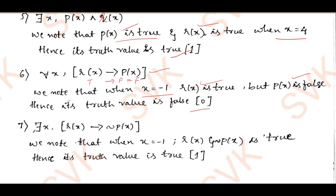Finally, there exists x, r(x) ∧ negation p(x). The same as the previous problem but instead of p(x) we have negation p(x). Therefore, instead of a false statement it will be a true statement. True ∧ true is always true. Therefore, the given proposition has truth value true.